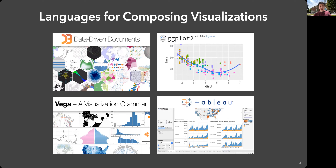D3 is a JavaScript library, very popular, and used to create different visualizations, as you can see in the examples in the screenshot. VEGA is the one built on top of D3. One of the things about VEGA is you don't need to know that much JavaScript to create visualizations — it's almost like a separate language just for visualization, built on top of D3.